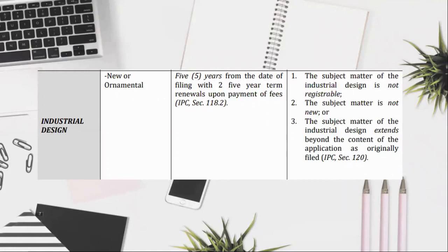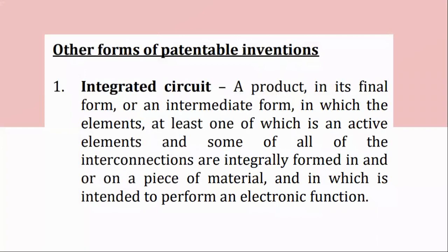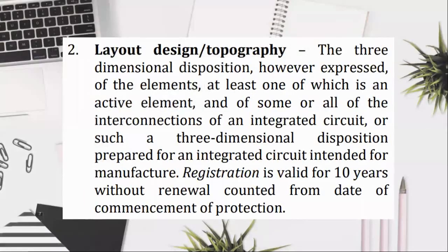Other forms of patentable inventions: (1) Integrated circuit — a product, in its final or intermediate form, in which the elements, at least one of which is an active element, and some or all of the interconnections are integrally formed in and/or on a piece of material, and which is intended to perform an electronic function. (2) Layout design/topography — the three-dimensional disposition, however expressed, of the elements, at least one of which is an active element, and of some or all of the interconnections of an integrated circuit, or such a three-dimensional disposition prepared for an integrated circuit intended for manufacture. Registration is valid for 10 years without renewal, counted from date of commencement of protection.